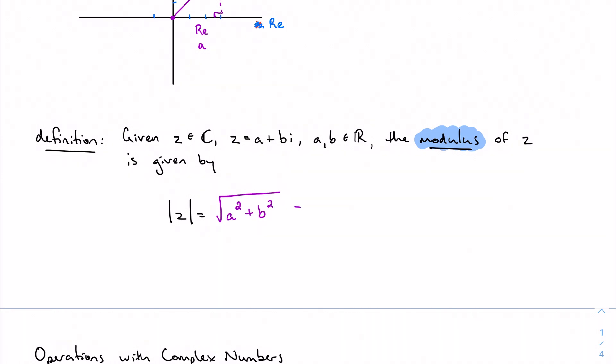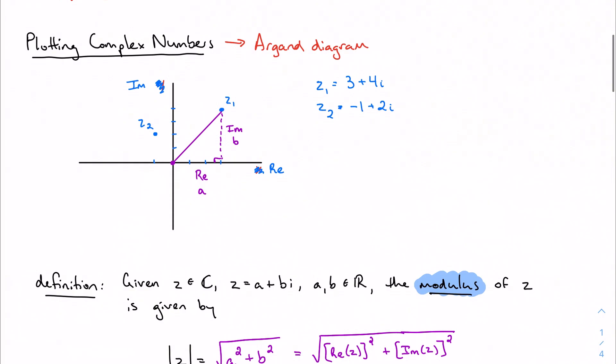I'm taking the real part of the complex number and squaring it, and the imaginary part and squaring it, and taking the square root of my result. It should look just like the distance formula, as we saw on our Argand diagram.